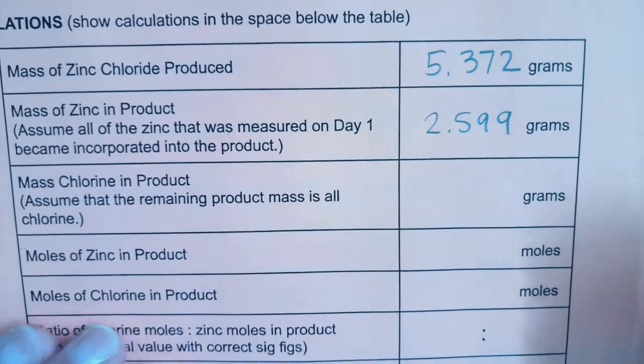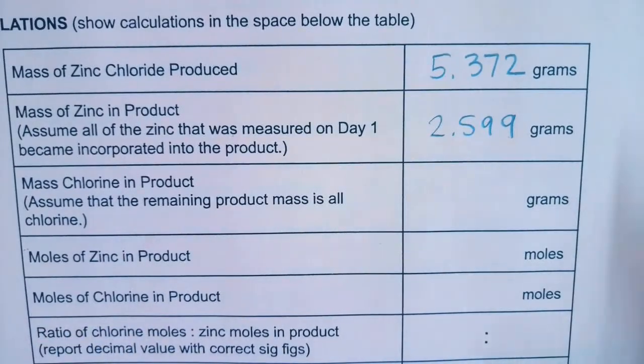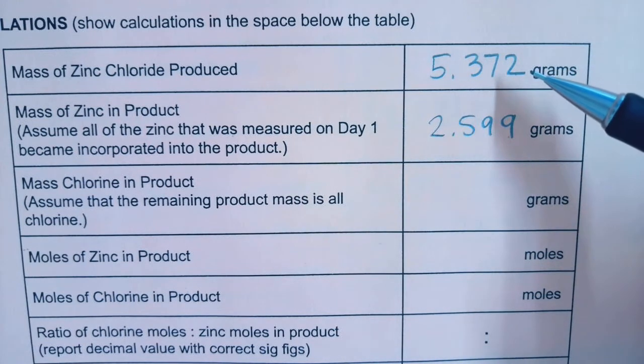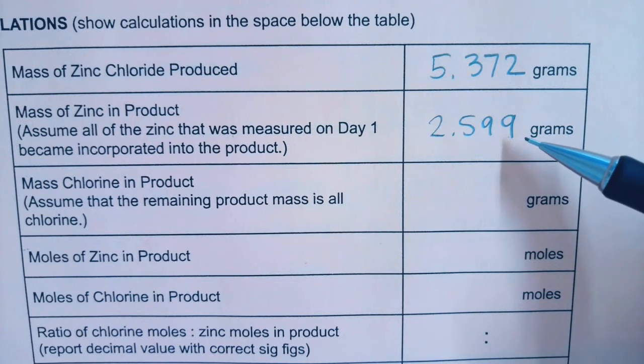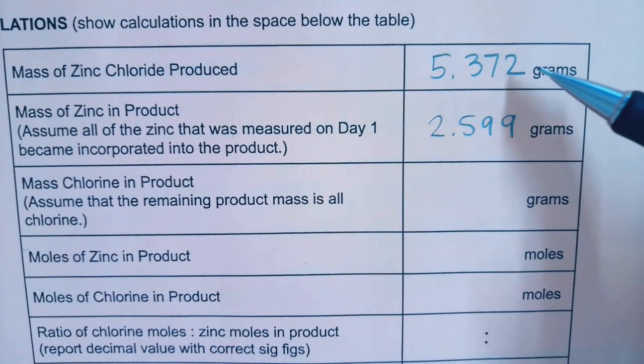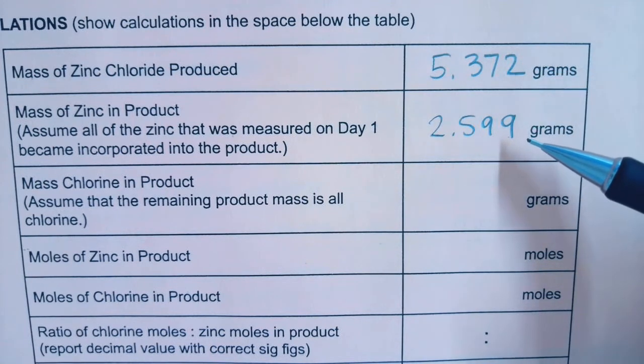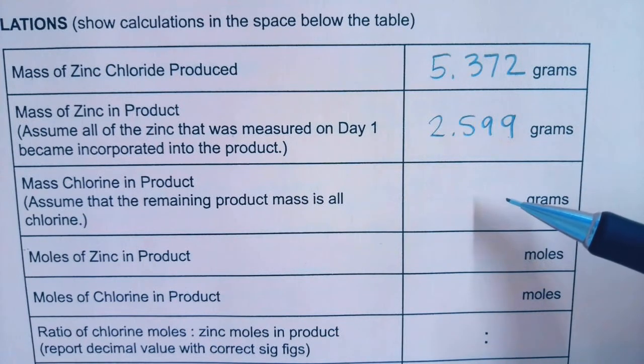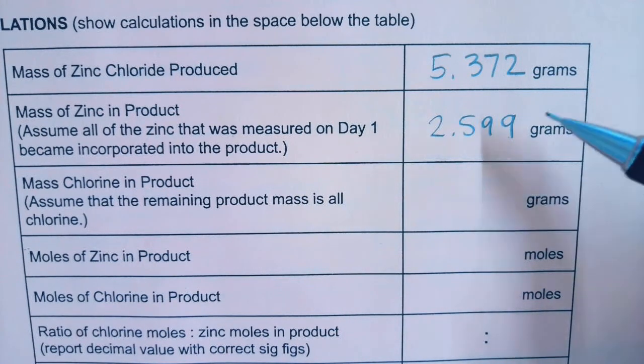Now continuing with my calculations. This would be the product. This would include the zinc and the chlorine that is now bonded together. I already assumed that the zinc that I have in this total is from the zinc that I started with. So the mass of chlorine in product would be the difference between these.